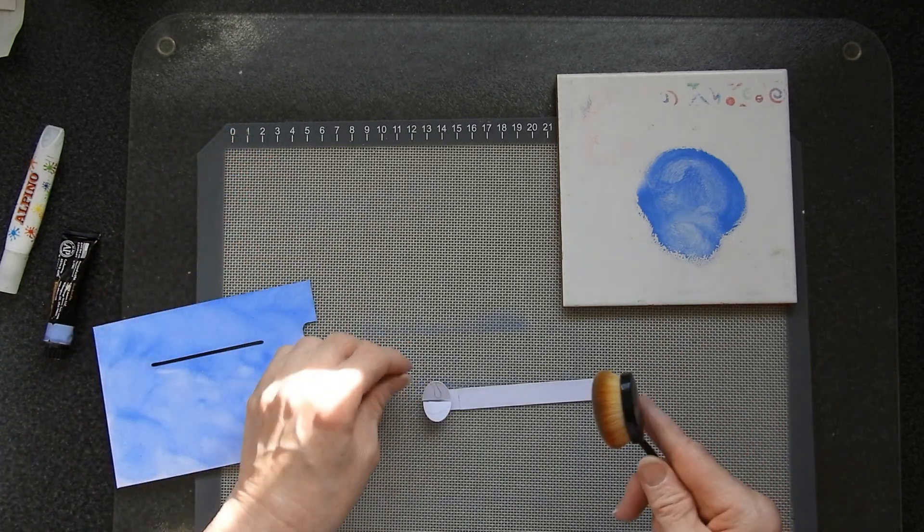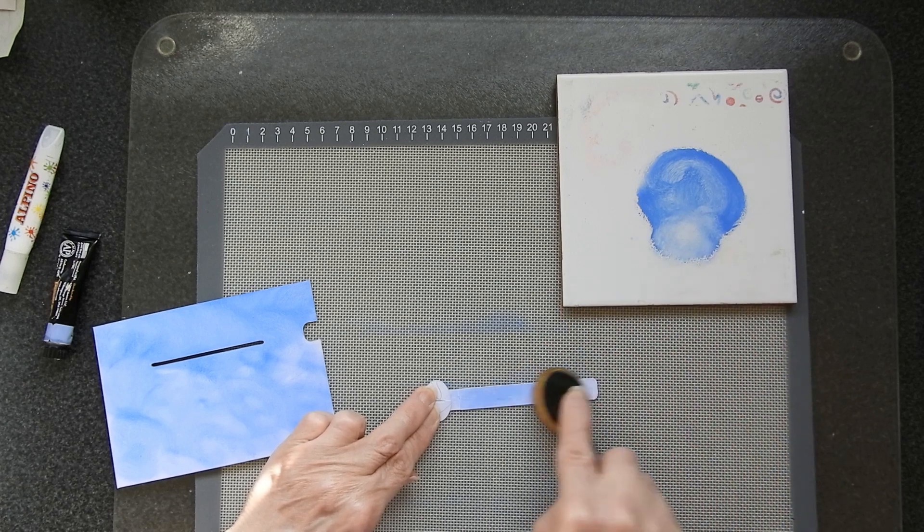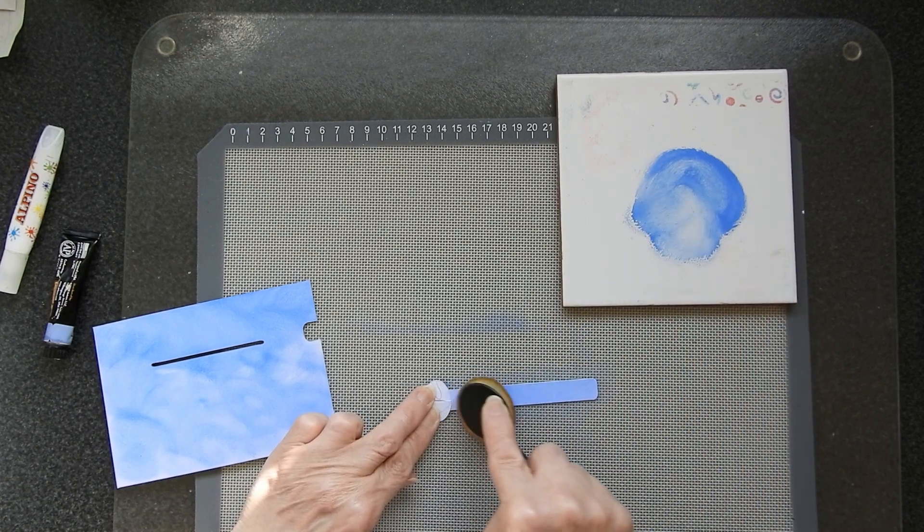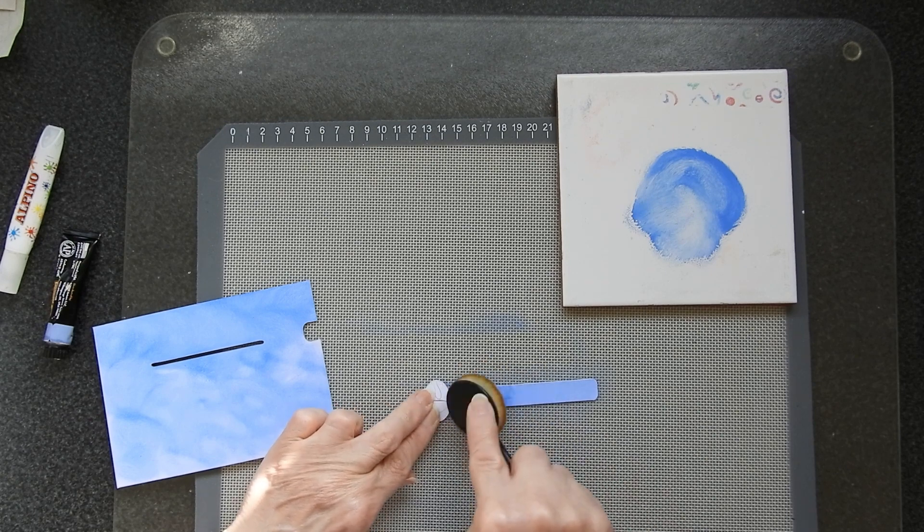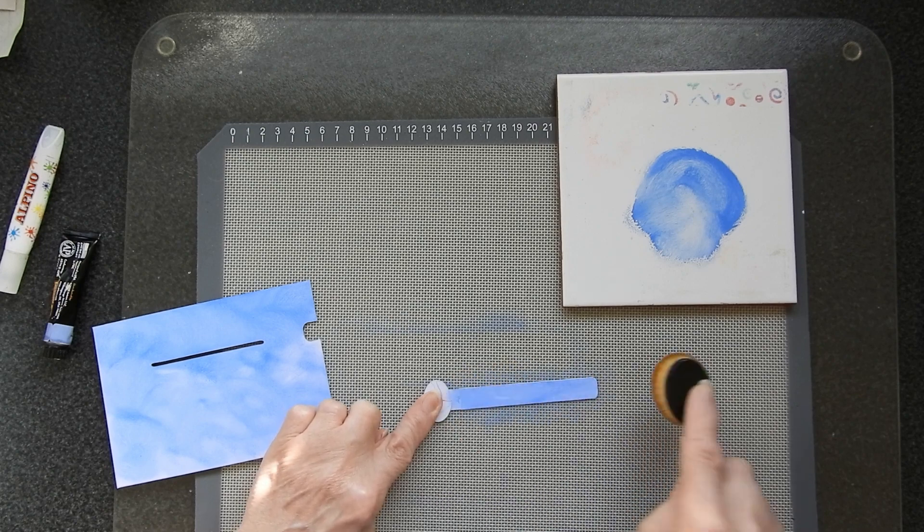This bit here I also want to color so that it's going to blend in. There we go. I'm not worrying about this bit because that's going to be covered over.